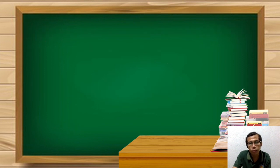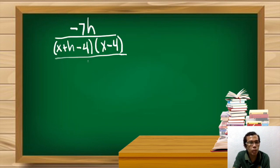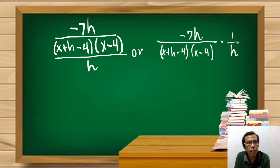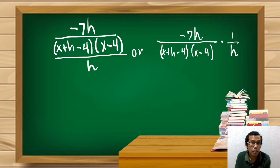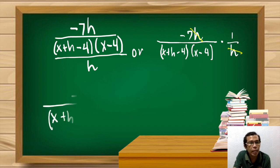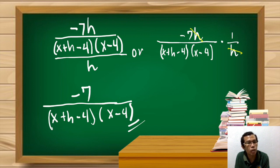We're left with negative 7h over our LCD (x+h−4)(x−4). Now we divide by h: we write this as negative 7h divided by (x+h−4)(x−4), multiplied by 1/h. We cancel h, and we're simply left with negative 7 all over (x+h−4)(x−4). That is our final answer for Example 3.